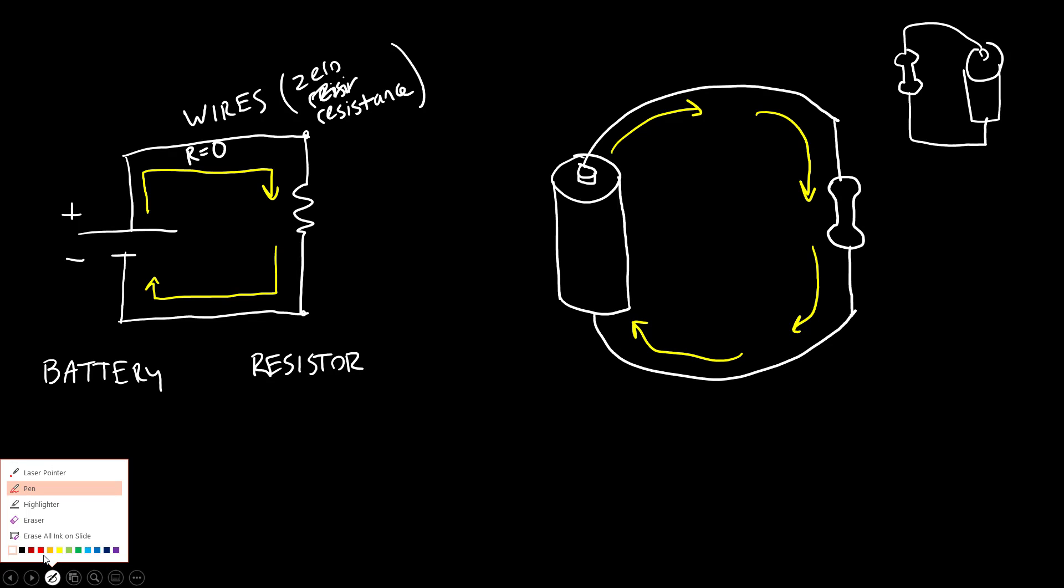I'm still going to have current flowing electrically in the same direction. It's going from the positive terminal of the battery through the resistor and to the negative terminal of the battery. So even though I flipped that around, electrically I haven't changed anything.